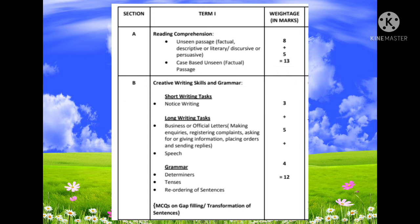All questions will be MCQ. Section B is creative writing skills and grammar, with a total of 12 marks for writing and grammar combined. In the creative writing section, you have a short writing task and a long writing task. For term 1, the short writing task is notice writing, carrying 3 marks. The long writing task includes business or official letters — such as making enquiries, registering complaints, asking for or giving information, placing orders, and sending replies — carrying 5 marks. Speech is also an optional long writing task.